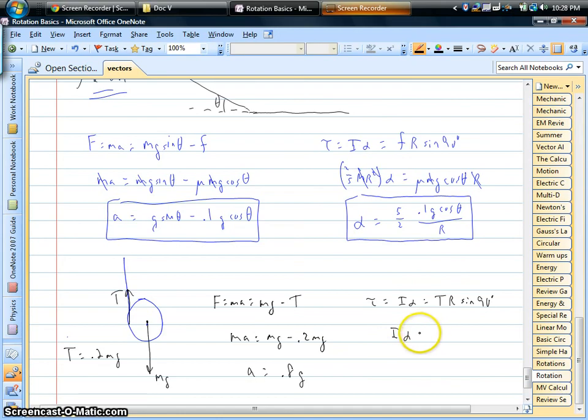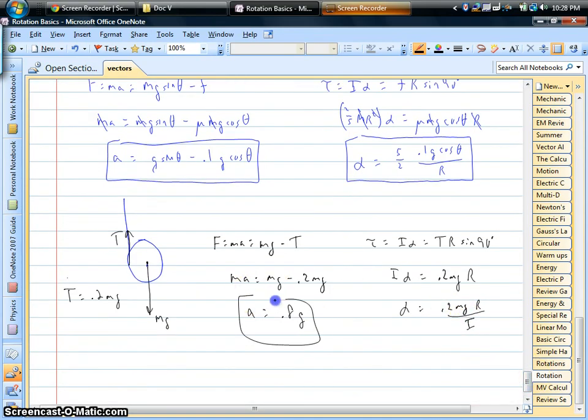Presumably, we'd be given the shape of the objects. We'd know the inertia. And our alpha is going to be 0.2 times the weight radius over whatever the moment of inertia is. And we'd have our answers.